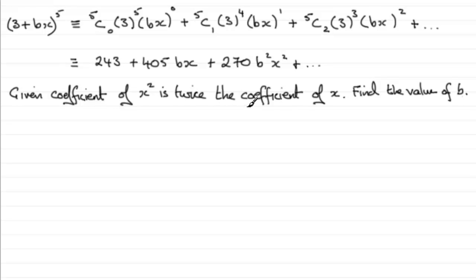Well, if that's the case, all we've got to do is look at the value in front of x squared, the coefficient, which is 270b squared. So we can say that, therefore, 270b squared, that's the coefficient of x squared, is twice the coefficient of x. In other words, twice 405 times b.